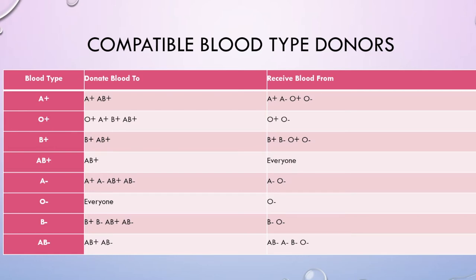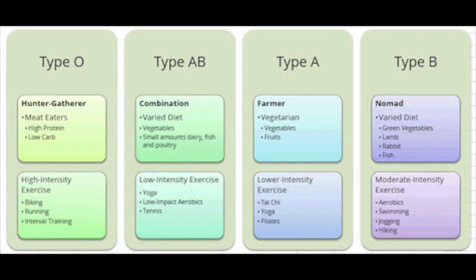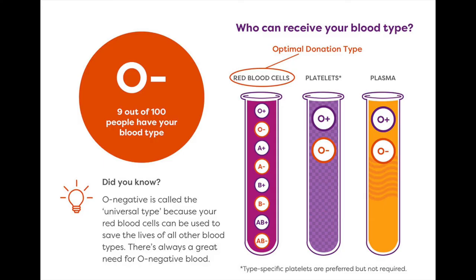If we look at AB positive, you can donate blood to AB positive and you can receive blood from everyone — that's why it's called the universal recipient. And if you look at O negative, you can donate blood to everyone and receive blood only from O negative, making it the universal donor.